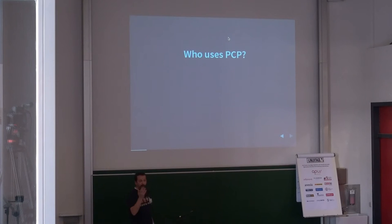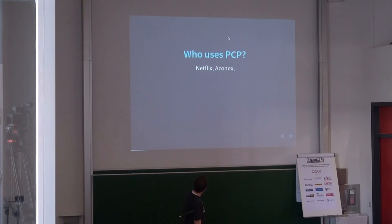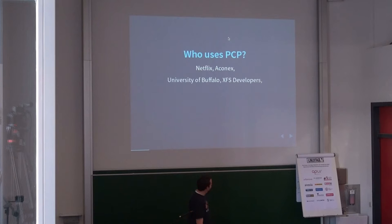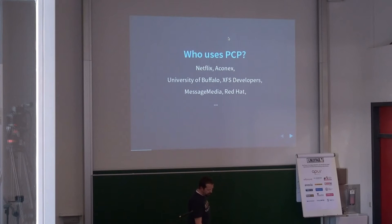Very few of you have heard of it. The next question is: who uses this anyway? It's actually used at a bunch of companies — these are the ones that gave us permission to go public. Netflix is probably the biggest user. Aconix is a big IT shop in Australia. The University of Buffalo uses it for their HPC clusters. The XFS filesystem developers use it for performance, and Red Hat has started using it. The biggest user is Netflix.